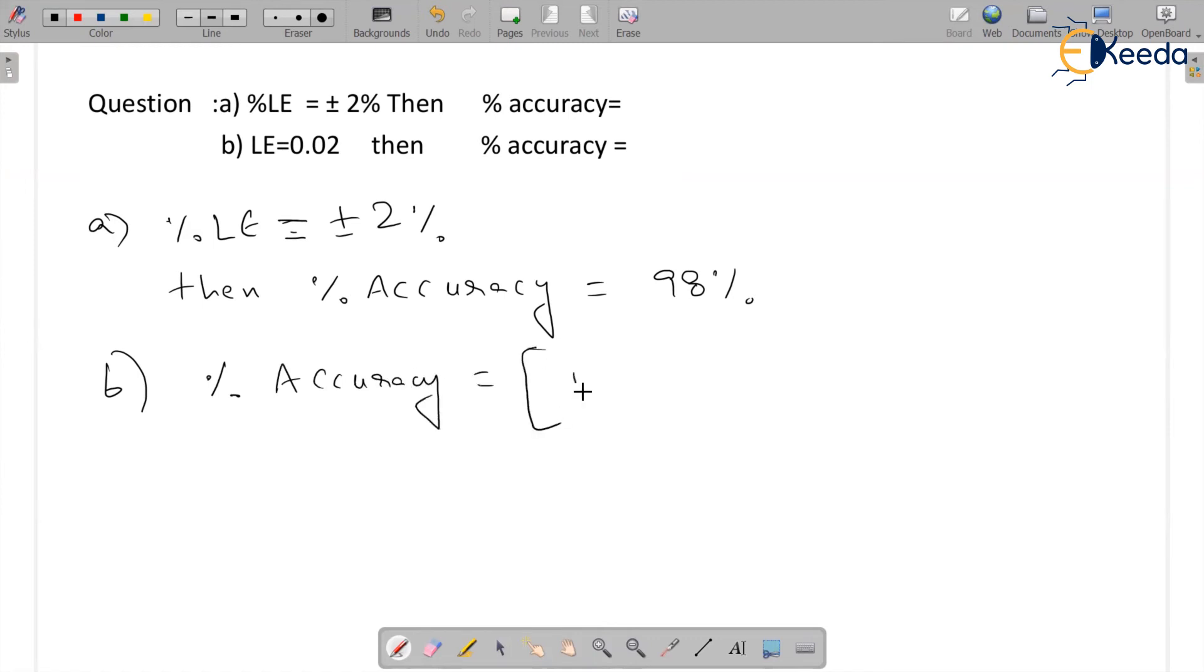is equal to 1 minus modulus of LE into 100. This gives rise to 1 minus 0.02 into 100, this will give rise to 98%.